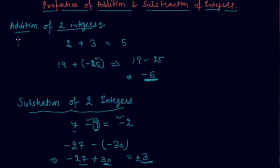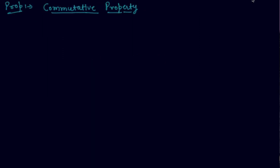Let me write some properties based on addition and subtraction. The first property is the commutative property. This property states that if you add a to b, the result will always be the same as b plus a — meaning a plus b will always equal b plus a.